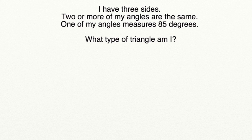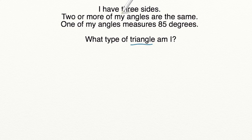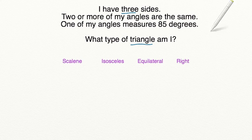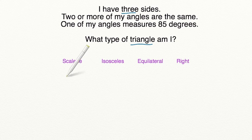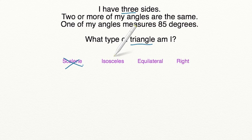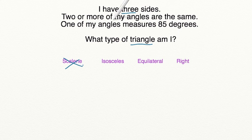Let's try this riddle together. I have three sides. Two or more of my angles are the same. One of my angles measures 85 degrees. What type of triangle am I? We know that all triangles have three sides, so let's list our four types of triangles. If two or more of the angles are the same, that means the triangle can't be a scalene triangle. Isosceles, equilateral, and right triangles can all have two or more angles that are the same.